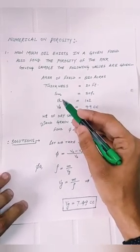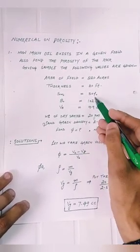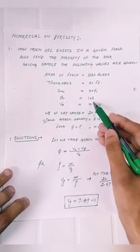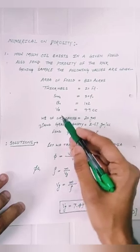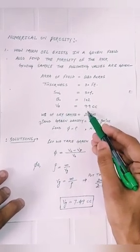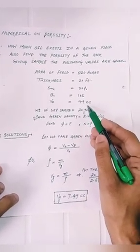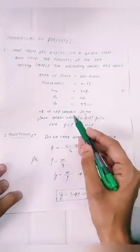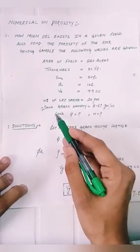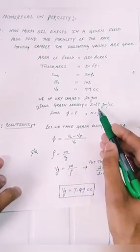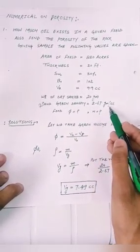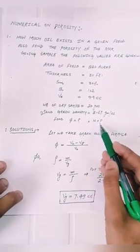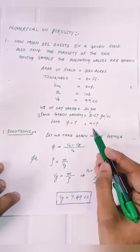So the values are given: area of field 820 acres, thickness is 20 feet, connate water saturation is 30%, oil formation volume factor is 1.02, and bulk volume equals 9.9 cubic centimeters.